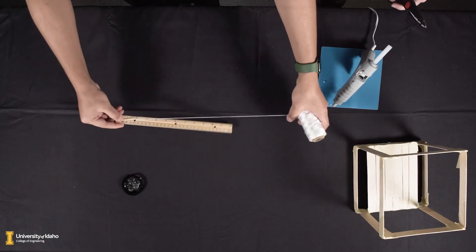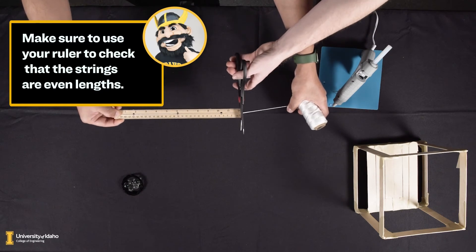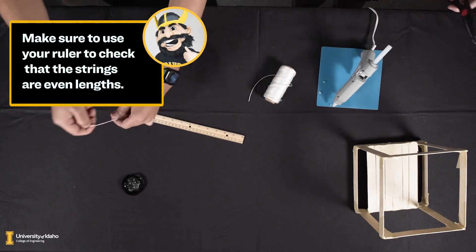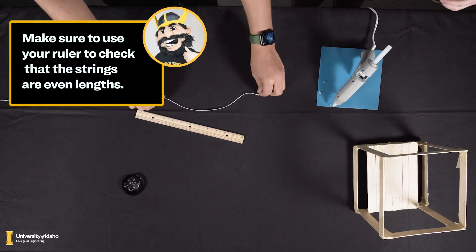Next, we are going to create the strings that will hold the marbles. Cut five equal pieces of string, approximately eight to twelve inches long, depending on the size of your popsicle sticks. Make sure to use your ruler to check that the strings are even lengths.